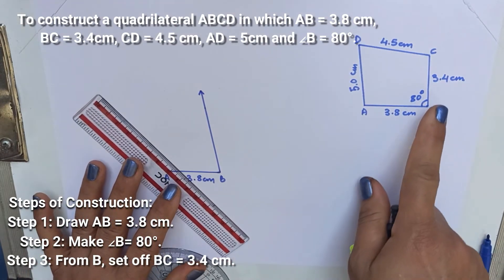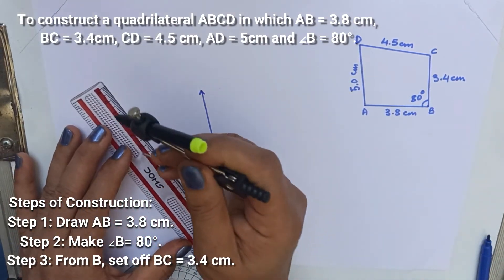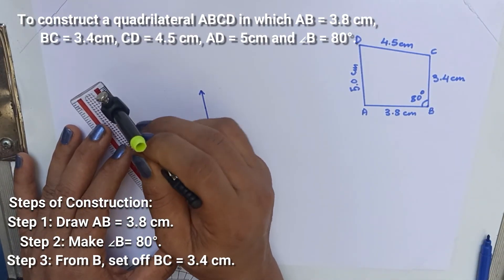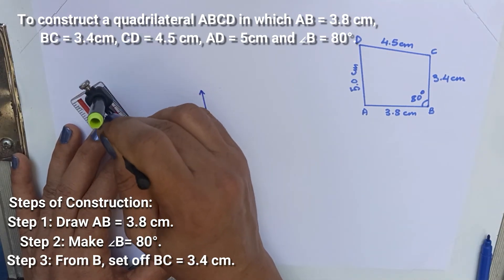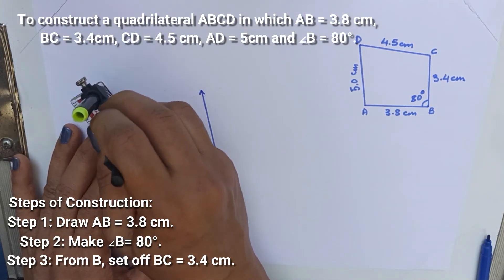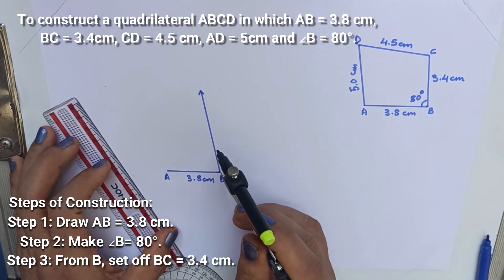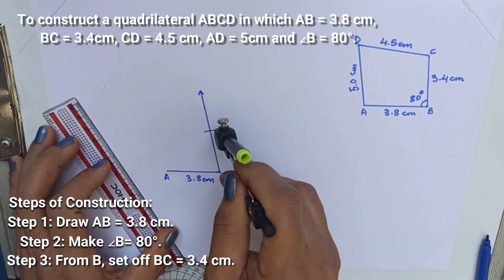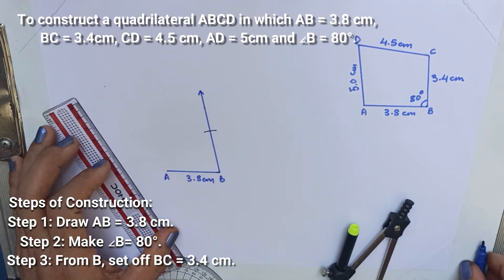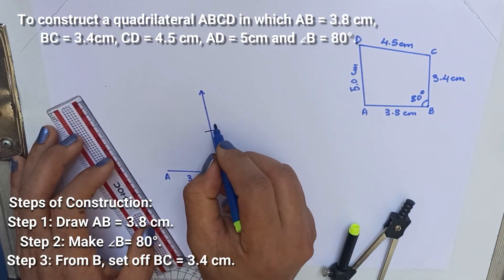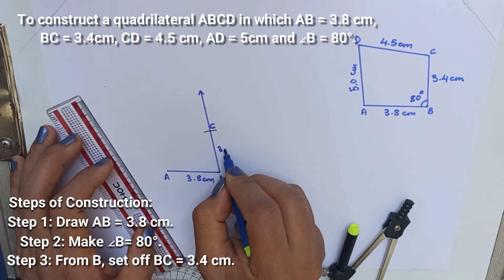Open your compass equal to 3.4 cm. Place your compass at B. Make an arc. This is point C. Write the measurement 3.4 cm.